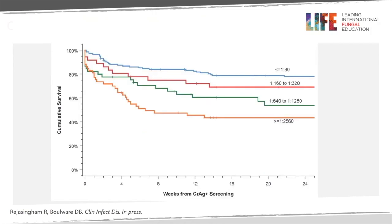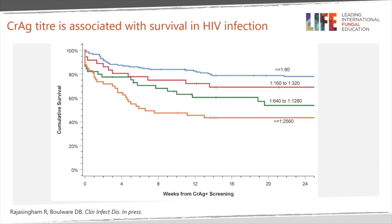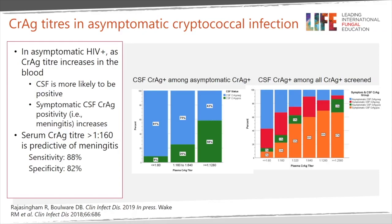This figure highlights the strong correlation between CrAg titer and CSF cryptococcal culture. Furthermore, CrAg titer is associated with survival in HIV-infected people. This figure combines four African cohorts of asymptomatic HIV-infected people screened for cryptococcal infection and treated with fluconazole. Here we can see the effect of CrAg titer on six-month survival — those with a high titer had low survival.